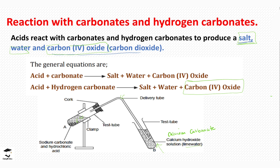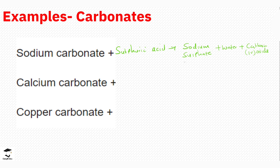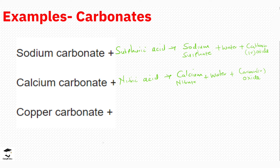Other examples include sodium carbonate, calcium carbonate, and copper carbonate reacting with other acids. When sodium carbonate reacts with sulfuric acid, it forms sodium sulfate, water, and carbon dioxide. When calcium carbonate reacts with nitric acid, it forms calcium nitrate, water, and carbon dioxide. When copper carbonate reacts with hydrochloric acid, it forms copper chloride, water, and carbon dioxide.